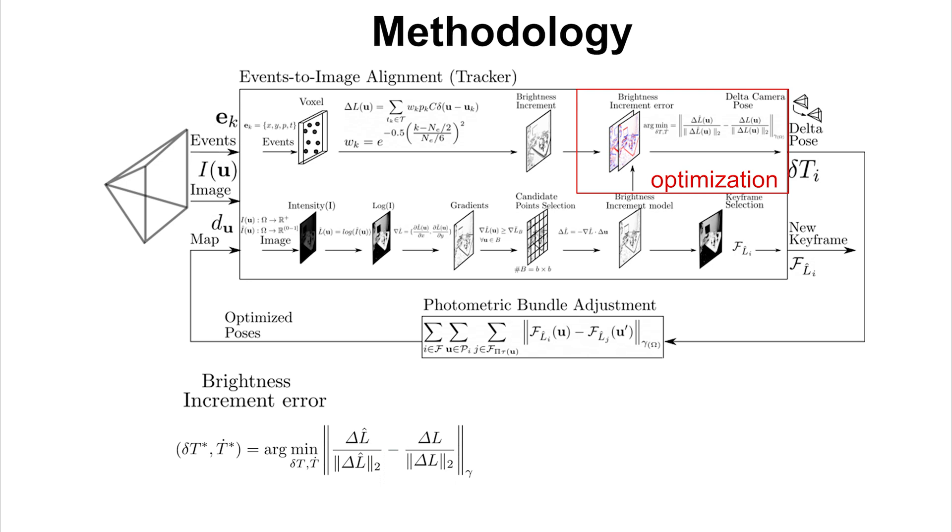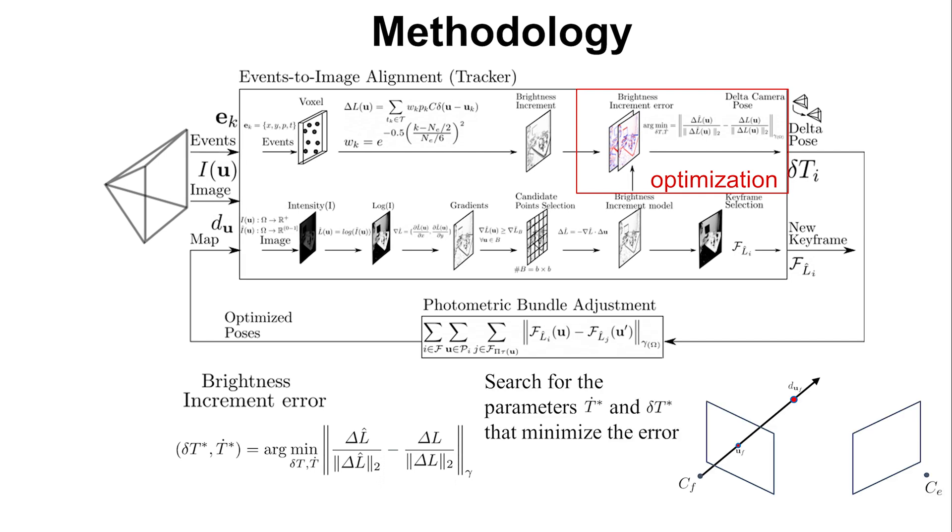Finally, we can compute the brightness increment error, the difference between the normalized brightness increment model and the measured brightness increment over a sparse set of pixels. The optimized parameters are the delta relative position and orientation and the instantaneous linear and angular camera velocities that minimize the error.